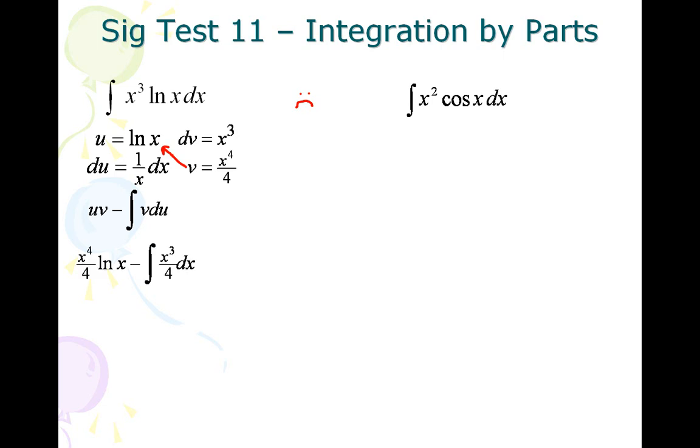When I do 1 over x times x to the 4th over 4 I can cancel one of the x's making it x cubed over 4. Do the antiderivative of x cubed over 4. You get x to the 4th over 16 and then don't forget to do your plus c.